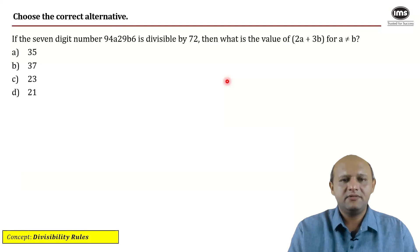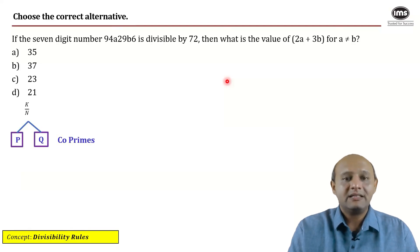Concept tested is divisibility rules. Now, how do you assess the divisibility of any given number by a composite number? If the composite number is N, you need to break it into a product of two numbers, P and Q, such that they are co-primes. Check whether the number in concern is divisible by P and divisible by Q. If both are true, then the given number will be divisible by the required composite number.